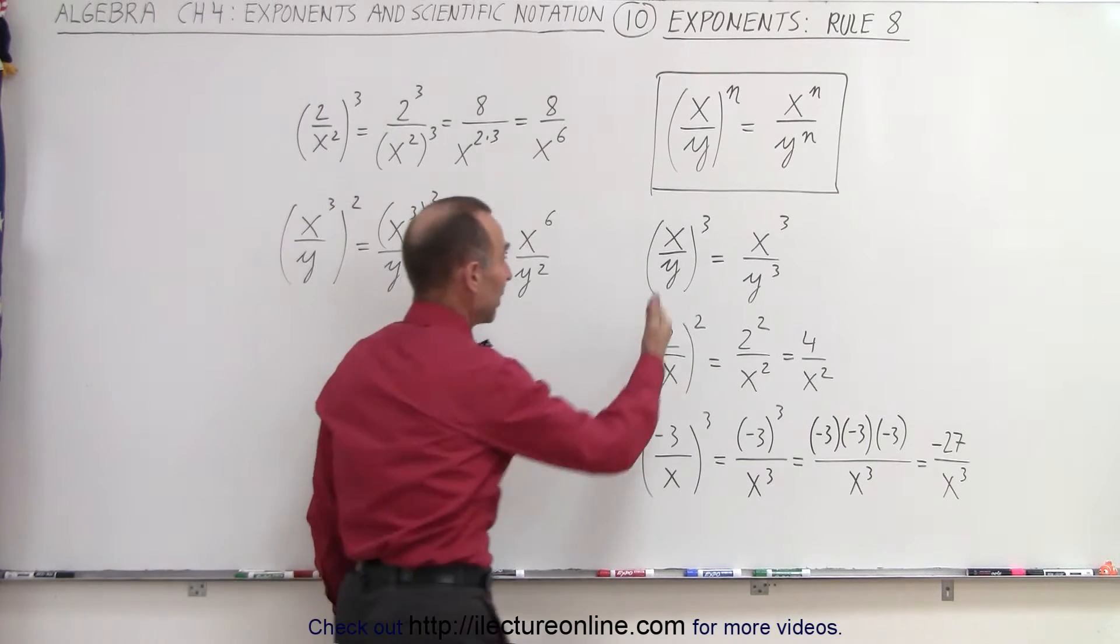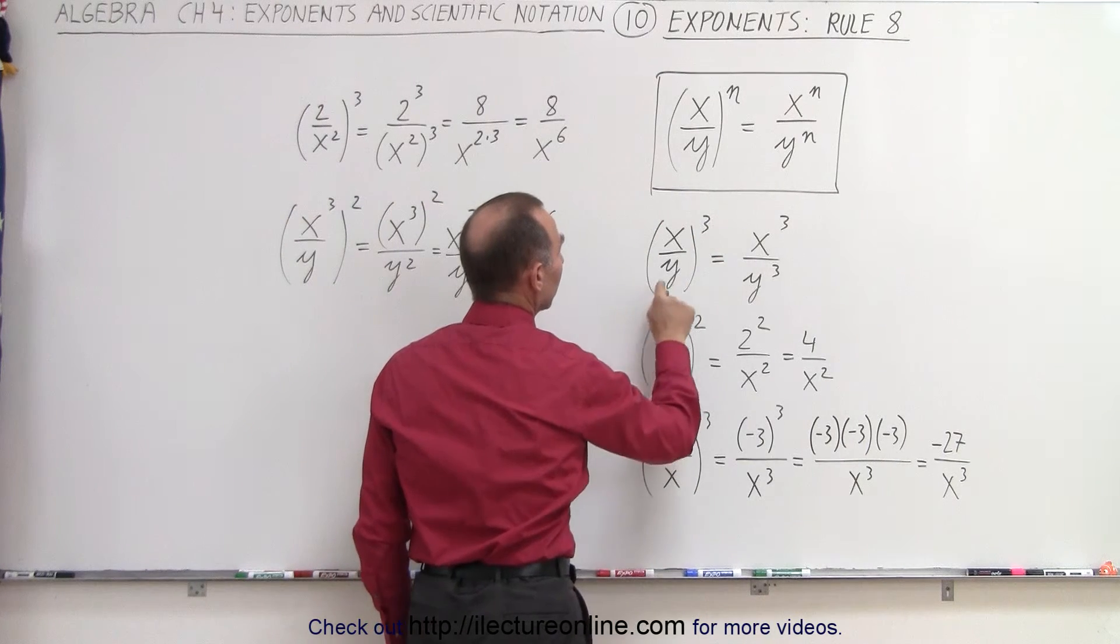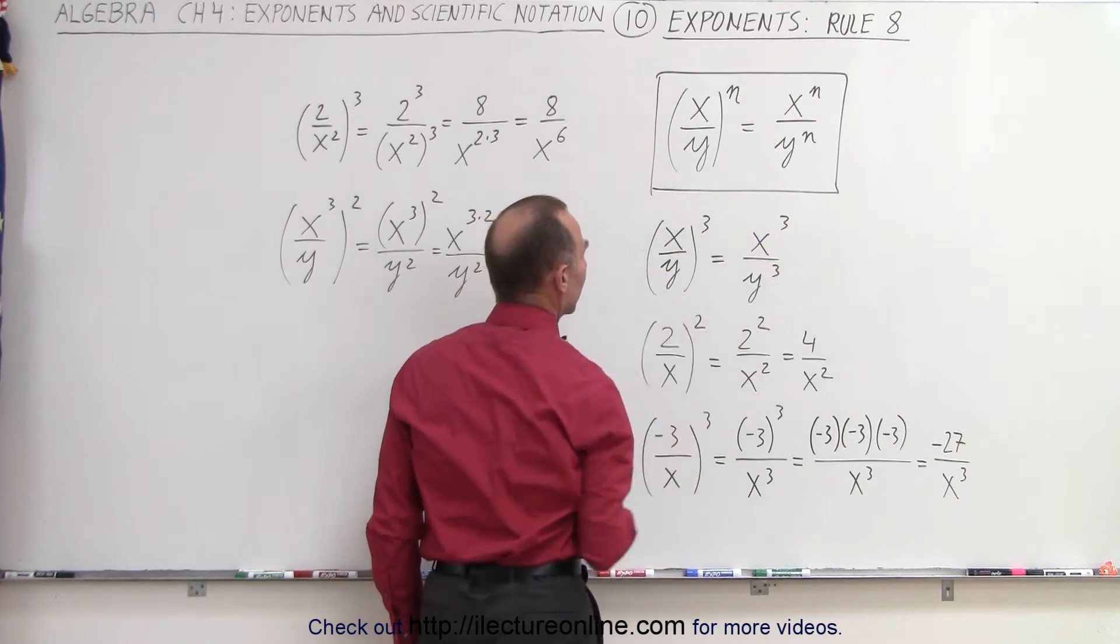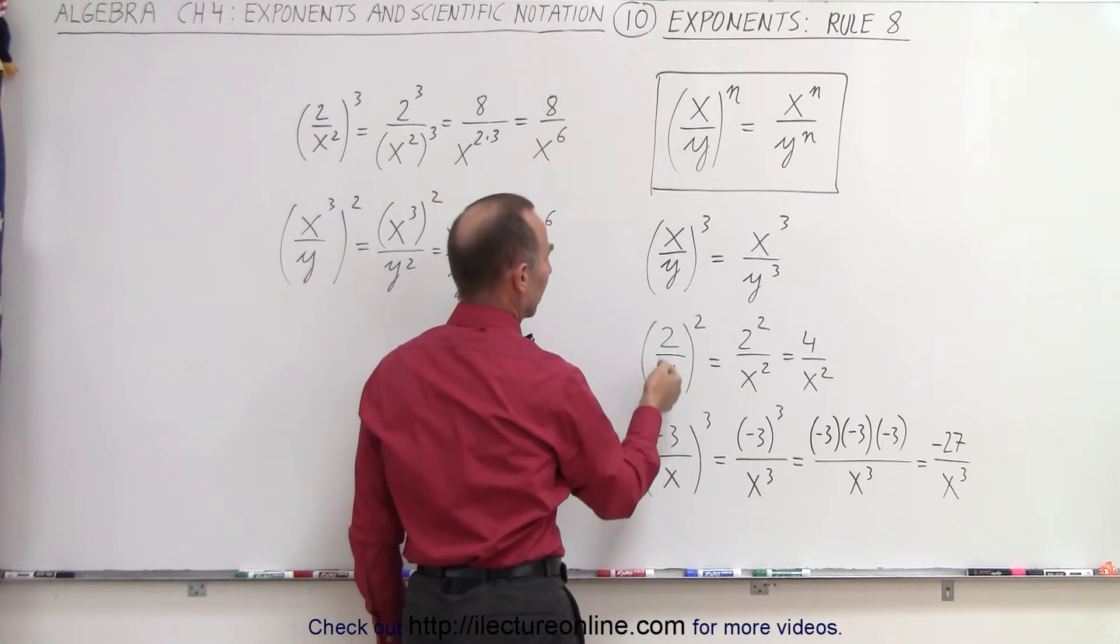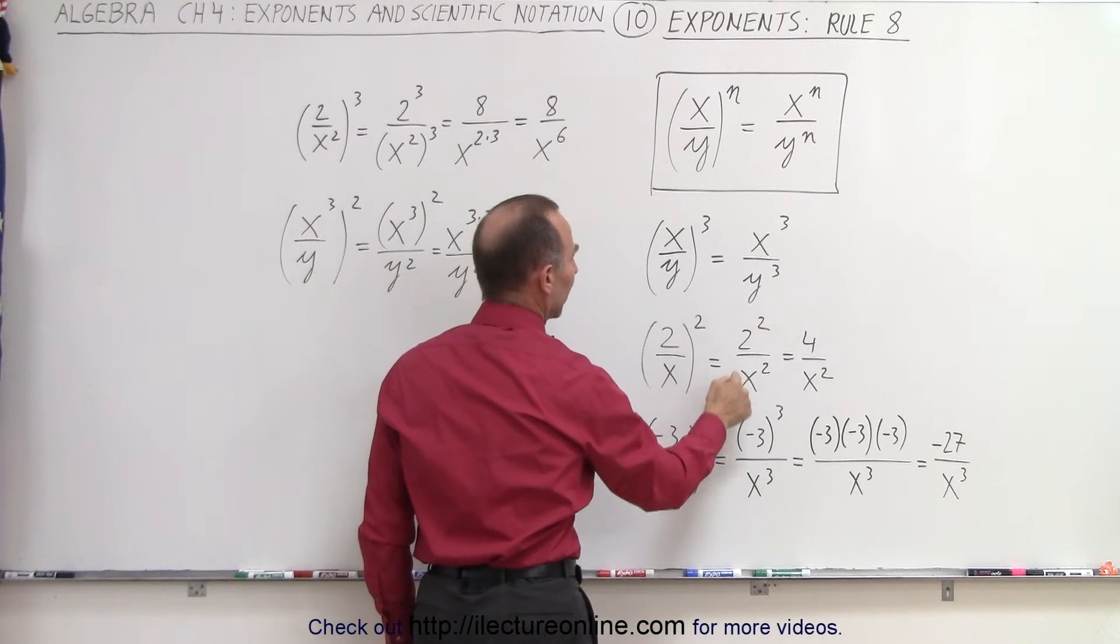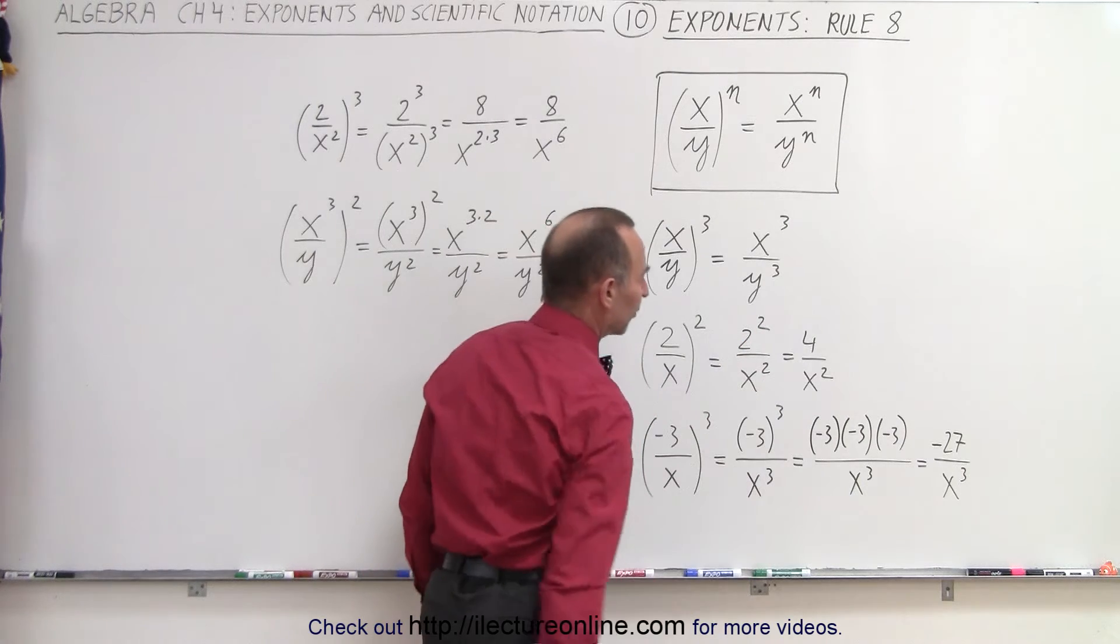And so an example of that is this. If we have x over y raised to the third power, that is equal to x cubed divided by y cubed. Or if we have 2 over x raised to the second power, that's 2 squared divided by x squared, and of course 2 squared is equal to 4.